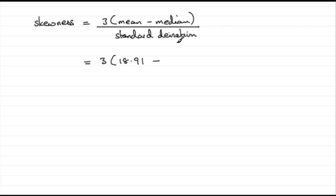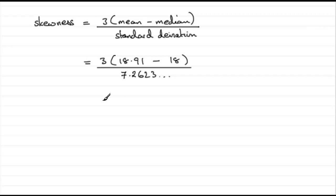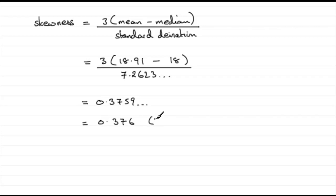Subtract the median, which was 18, and divide the result by the standard deviation, which using the unrounded version was 7.2623. If you work this out you end up with 0.3759, which to three significant figures is 0.376 to 3SF.